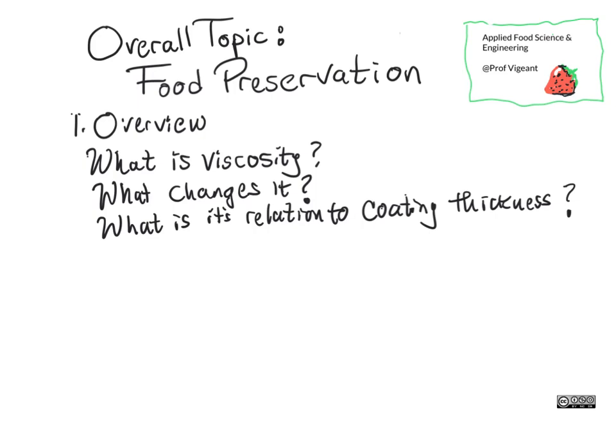In order to chocolate-cover something, we need to understand what it's like to dip a solid into a liquid and have that liquid stick. There are two pieces to this: one is about stickiness and adhesion, which will be in a different video, and the other is about what makes the fluid thicker or flow better. That requires the idea called viscosity — we're going to talk about the concept of viscosity, how you change it, and how it's related to coating thickness.